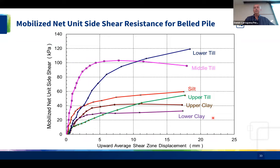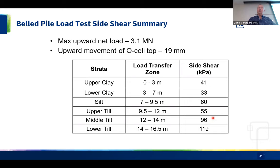This plot shows the shaft frictions mobilized from the strain gauges in clay and till. The clay gave us shaft friction of approximately 30 to 40 kPa, the silt layer gave about 60 kPa, and the till ranged from 55 up to 120 kPa. The maximum upward load was about 3 MN with 19 mm of movement.